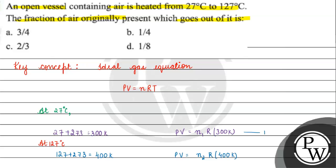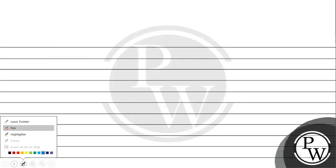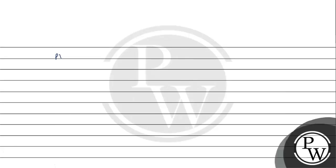Setting up equations 1 and 2: since we have an open vessel, the change in pressure and volume can be ignored — pressure and volume remain constant throughout.